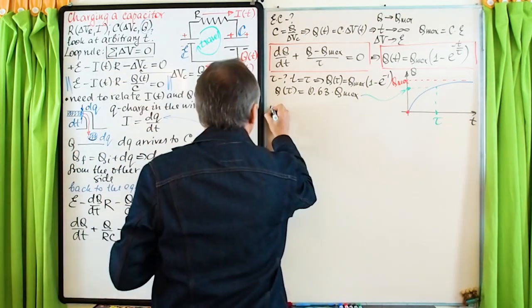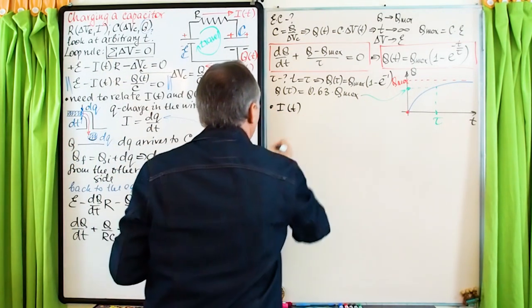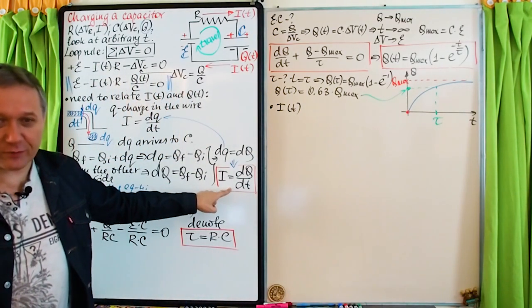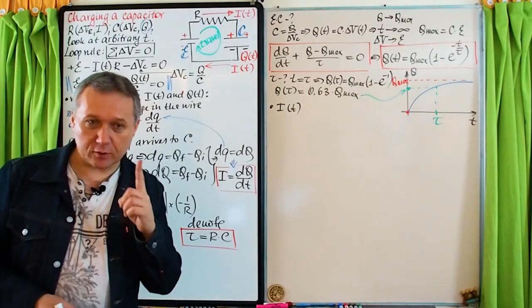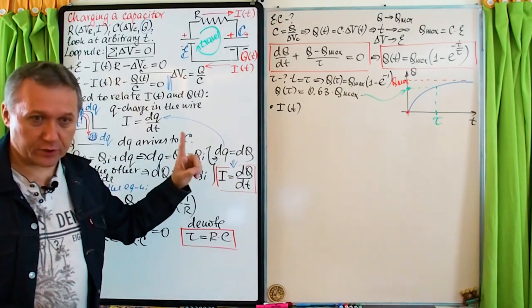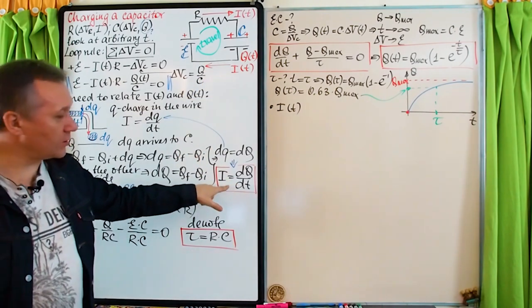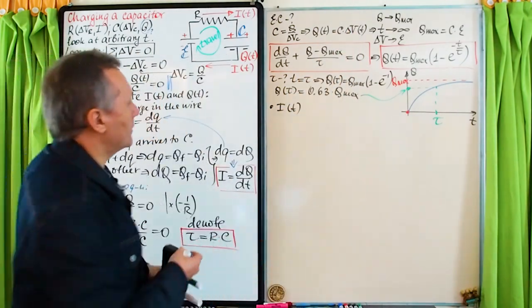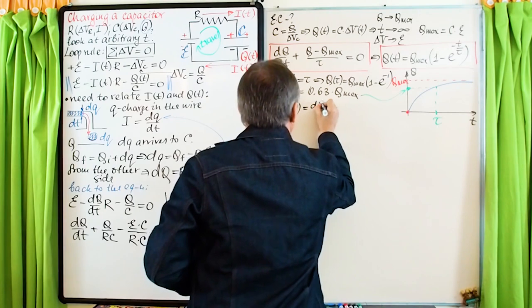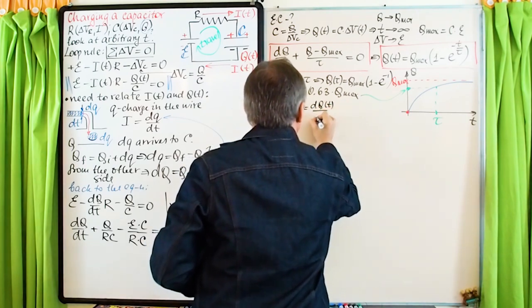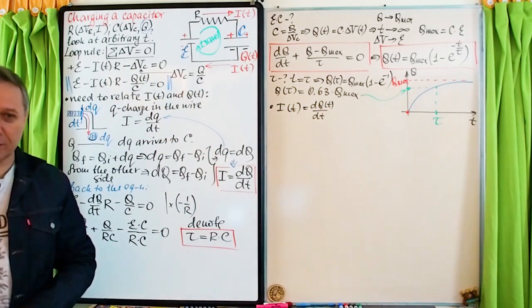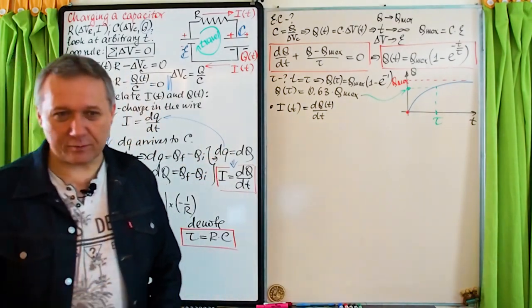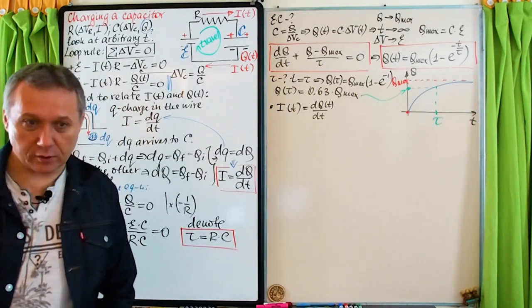To find the current, which is a function of time, we differentiate the charge. In the charging case there is no minus sign, so current I = dQ/dt. Differentiate Q_max · (1 − e^(−t/tau)): differentiating the constant gives zero, and differentiating the exponential term gives minus Q_max · (−1/tau) · e^(−t/tau).